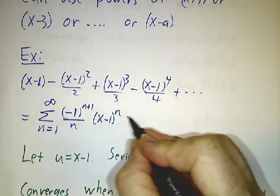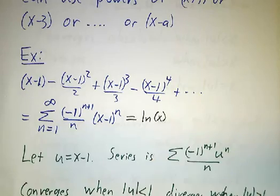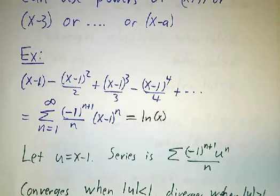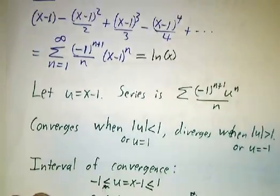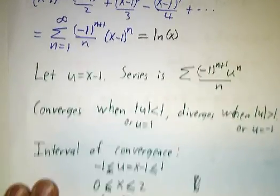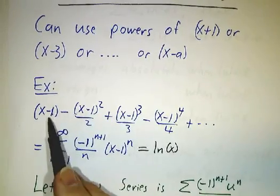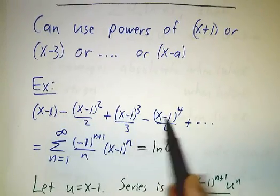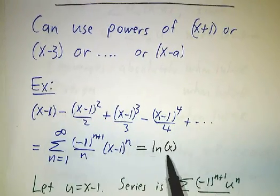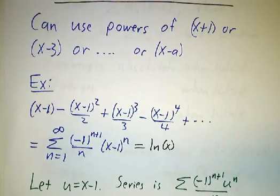By the way, this series happens to add up to ln x. And it's a series that works when x is between 0 and 2. And in fact, if you plug in x equals 2, you get 1 minus 1 half plus 1 third minus 1 fourth and so on, and that gives you the natural log of 2. We've seen this series before.